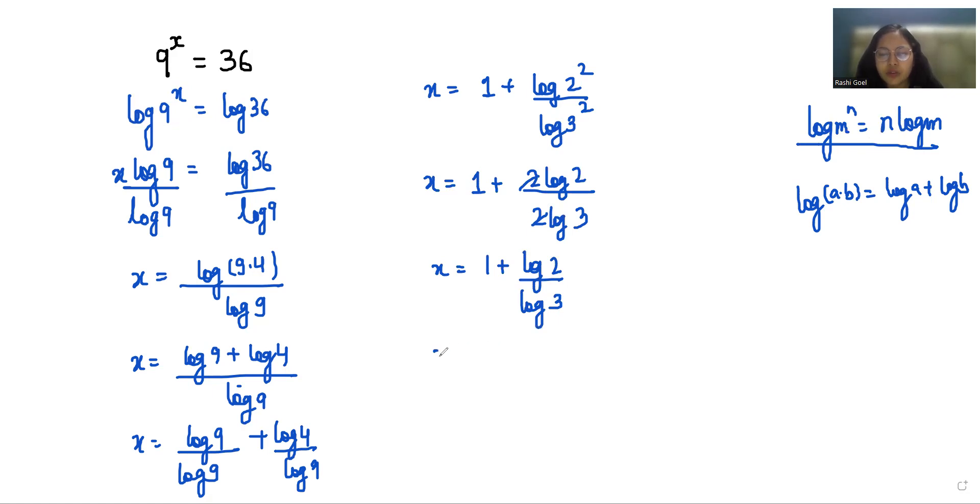Now using the values where log 2 is 0.3010 and log 3 is 0.4771, x equals 1 plus 0.3010 over 0.4771, which gives us 1 plus 0.6309.